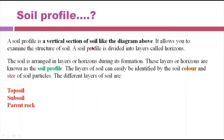Before going into a detailed discussion about the soil profile and the different layers of the soil, it is very important to understand what is meant by the soil profile. A soil profile is a vertical section of soil — like the diagram above — which allows you to examine the structure of the soil. A soil profile is divided into layers called horizons.